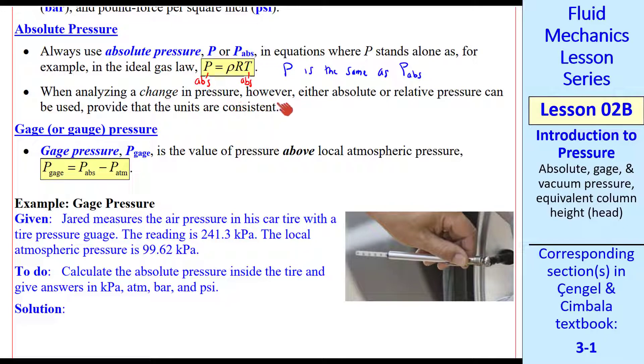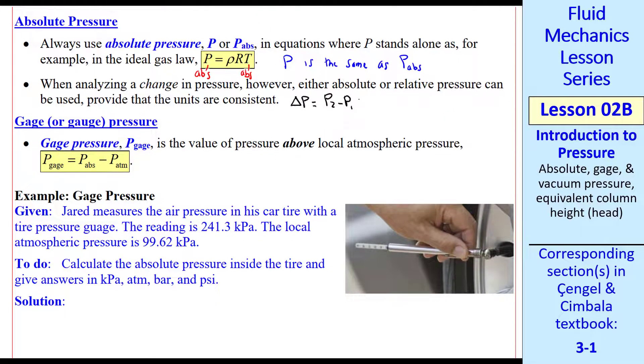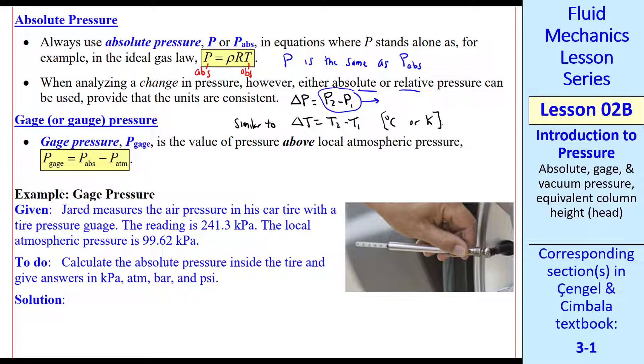When you're analyzing a change in pressure, you can use either absolute or some kind of relative pressure. For example, delta P, which is P2 minus P1. These two pressures can be absolute or relative. It doesn't really matter, as long as the units are consistent. This is similar to delta T. We can use degrees C or K when we're taking a temperature difference, and it doesn't matter.